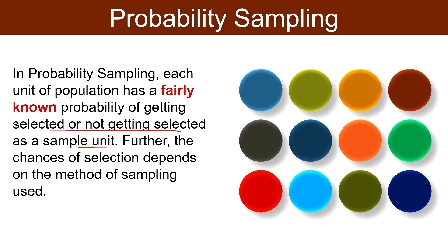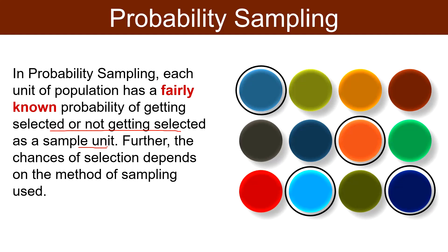Further, it is mainly used in conclusive research. Probability sampling is a lottery method under which the individual items are selected from the whole group, not deliberately but by using some mechanical process. Hence it satisfies the law of statistical regularity. Suppose from the given balls, the researcher chooses some random balls as a sample — that will be regarded as probability sampling.